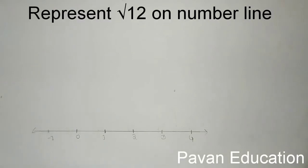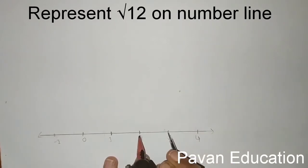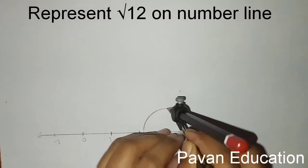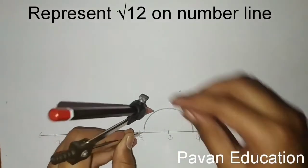Before going to representing root 12 on the number line, we first want to represent root 11. Then you can go to representing root 12 on the number line. If you don't know how to represent root 11 on the number line, I did a video about that — you can see the link in the description. First, we want to draw a 90-degree perpendicular.